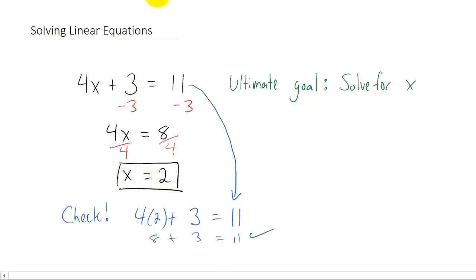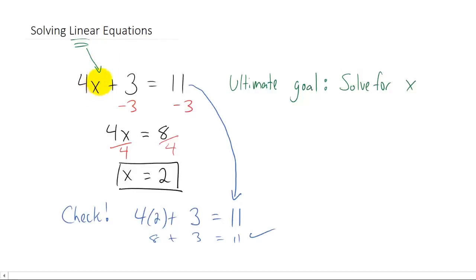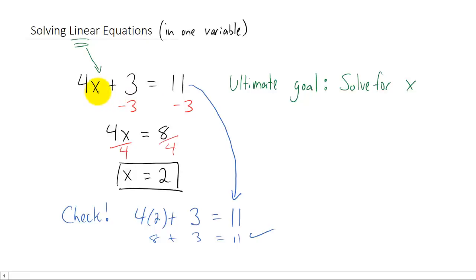Now let's explain why these are called linear equations. An equation is linear if the power on the variable is 1. In this case we just have x as our variable, and that x is raised to the first power — it's there even though you don't write it. More technically, this is a linear equation in one variable, because there is only one variable in the problem — you don't have, say, an x and a y.